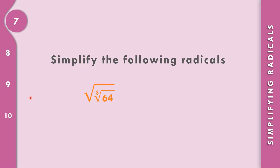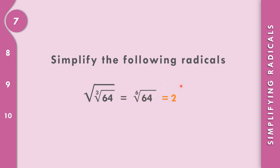Now we look at simplifying double radicals. For the square root of the cube root of 64, we multiply the indices: 2 times 3 equals 6, giving us the 6th root of 64. Since 2 to the 6th power equals 64, the 6th root of 64 equals 2. The final answer is 2.